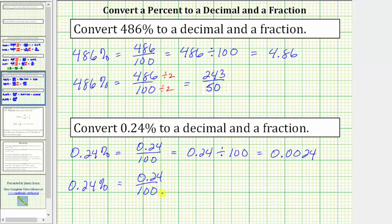And therefore, to create an equivalent fraction without decimals, we multiply the numerator and denominator by 100. 0.24 times 100 equals 24 and 100 times 100 equals 10,000.